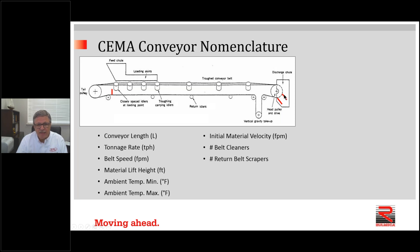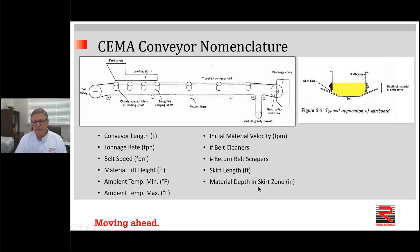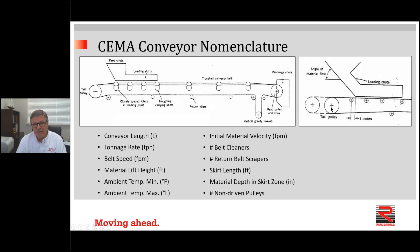Belt cleaners are scrapers typically on the face of the discharge pulley, and return belt scrapers are on the top of the return strand to prevent rocks from lodging between the tail pulley and the belt. Skirt length is defined as the distance from where material first falls on the takeaway conveyor to the exit of the skirt zone. We also need to define material depth in the skirt zone in inches, because if the skirt board is long, the drag of material rubbing against the steel skirt board can be significant. We also need to specify the frictional coefficient of the material.